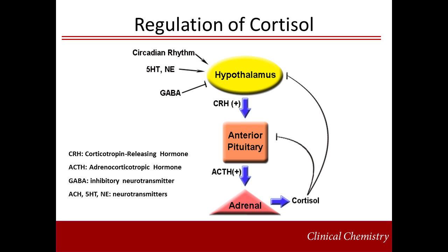Cortisol is regulated through feedback on the hypothalamic pituitary adrenal, or HPA, axis. In the HPA system, various stimuli cause hypothalamic release of corticotropin-releasing hormone, or CRH, which stimulates the release of adrenocorticotropic hormone, or ACTH, from the corticotropic cells of the anterior pituitary. ACTH, in turn, activates the adrenal zona fasciculata to make and release cortisol, which then feeds back on the hypothalamus and anterior pituitary to inhibit CRH and ACTH, respectively.